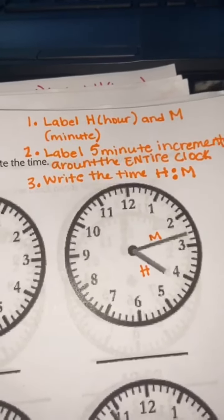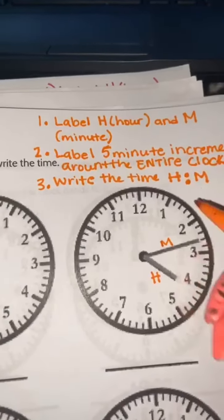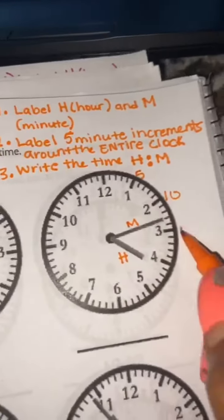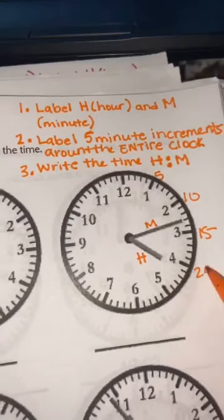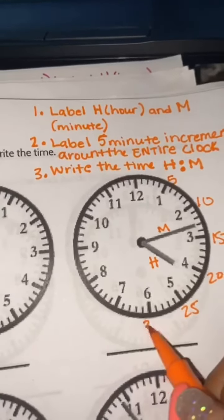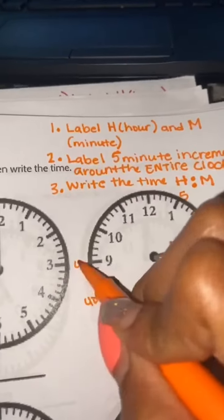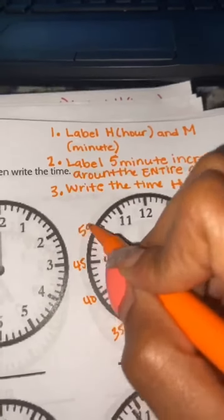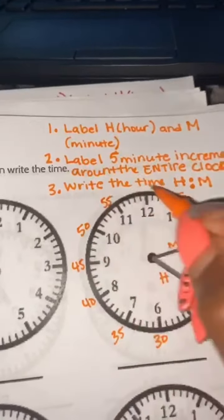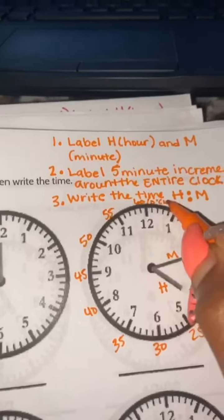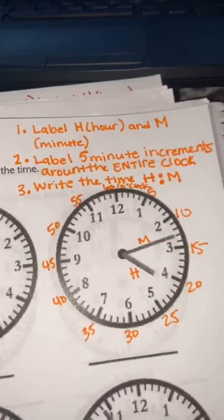Now you're going to label your five-minute increments around the entire clock. 5, 10, 15, 20, 25, 30, 35, 40, 45, 50, 55, 60—which is also a clock, because 60 minutes equals one hour.